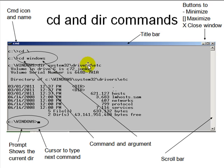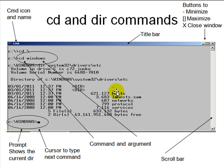When you run DIR on a folder, you see the drive, volume name, serial number, directory contents, and how much total size is in that folder and how much space is left on the disk. Dot is the current folder and double-dot is the parent folder. The black blinking dot after the prompt is called the cursor — that's where you type a command. The prompt shows you the current directory.